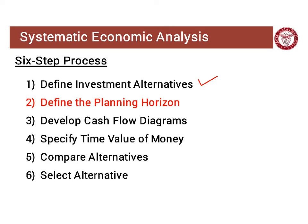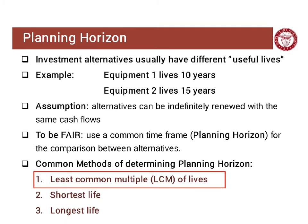The next step is to define the planning horizon. We call it here 'useful lives,' so for every design you need to think about its useful life. For example, equipment one can live up to 10 years but the second only 15 years. To compare apple to apple, you assume that alternatives can be renewed indefinitely, which makes fair comparison easier.